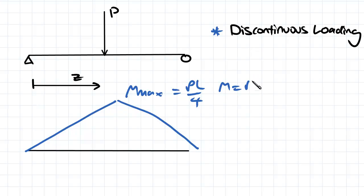The first equation is M equals Pz over 2, and that occurs up until the point when z is equal to L over 2. So when z is less than or equal to L over 2, we've got this equation here.